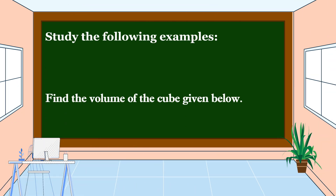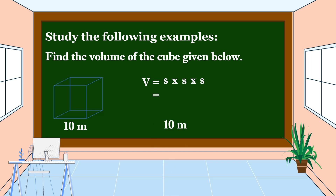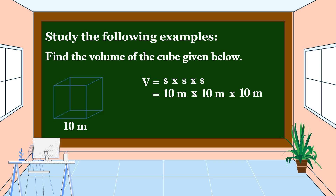Another example. Find the volume of the cube given below with a side of 10 meters. To get the volume, we are going to use this formula: Volume is equal to side times side times side. The side is 10 meters, so 10 meters times 10 meters times 10 meters.